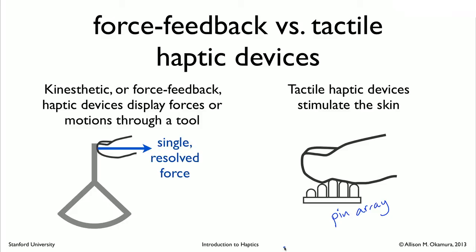Tactile haptic devices stimulate the skin, usually creating a distributed set of forces on the skin. These multiple pins, which can move up and down, might each display their own force or displacement. This raises an interesting question: what is really created by a haptic device—a displacement or a force? This has not been fully resolved in the neuroscience or psychophysics community. If you feel a force, you also get a resulting displacement because the skin has some nominal stiffness. Likewise, if you generate a displacement, you also feel a force. So tactile devices are sometimes described as creating forces and sometimes as creating displacements.